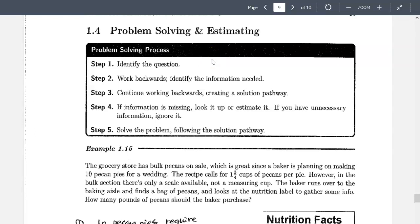Number 2, work backwards. Find out all information that we needed or if there's anything missing. Step 3, continue working backwards, creating a solution pathway. Step 4, if information is missing, look it up or estimate it. If you have unnecessary information, ignore it. Last but not least, solve the problem, follow the solution pathway.